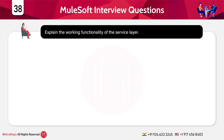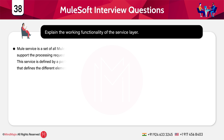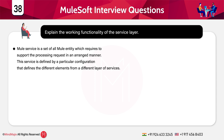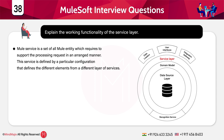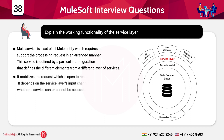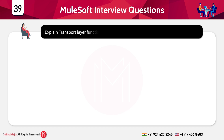Explain the working functionality of the service layer. A Mule service is a set of all new entities that need to support processing requests in an arranged manner. The service is defined by a particular configuration that defines different elements from different layers. It mobilizes the request which is open to receive a particular request. Whether a service can or cannot be accessible outside the public ESB depends on the service layer's input channels.